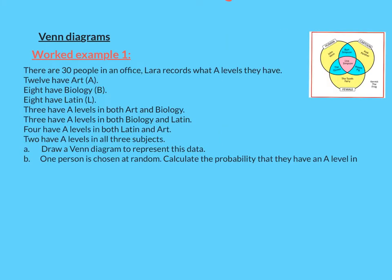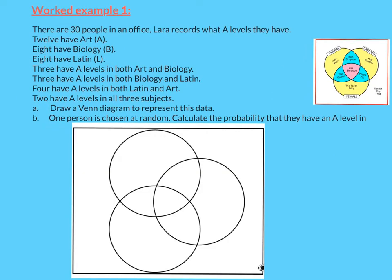So let's look at this worked example. Once again, this is going to be a three event Venn diagram. We've got a lot of writing here which can be quite overwhelming. We're just going to take it one line at a time. So first of all, 30 people in an office. Lara records what A-levels they have. We're looking at A, B, and L. So let's draw this out for a Venn diagram. So let's fill in what we know. First of all, let's have our art, biology, and Latin. We're told the whole amount of biology, Latin, and art. That's not a lot of good for us at the moment, but we do know these things are more useful. So let's start with this. Two who have A-levels in all three subjects. Two.